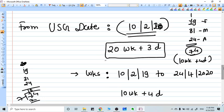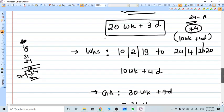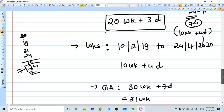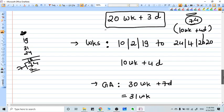Now we need to add this 10 weeks plus 4 days into the gestational age given in the ultrasound on the date which it was done. In this case, it is 10th of February. So we are going to add both values: 10 weeks plus 4 days into 20 weeks plus 3 days.